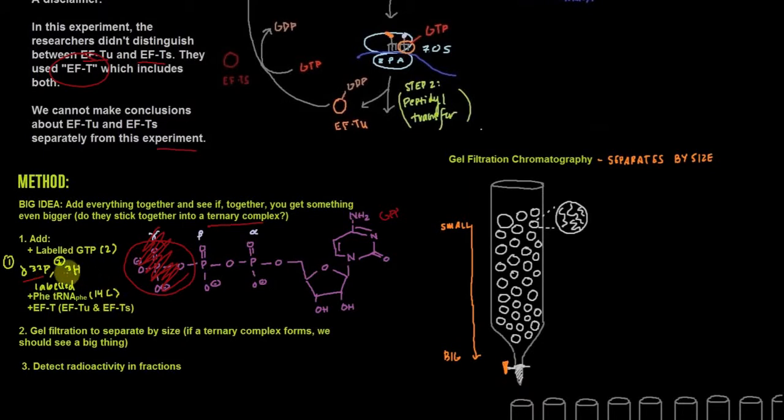Once we mix this stuff together and see if it formed a ternary complex, we'll use gel filtration to separate by size. If a ternary complex forms, we should see some kind of big thing in one of the fractions, and then we'll detect the radioactivity in each of the fractions.